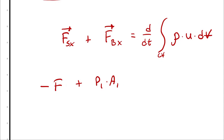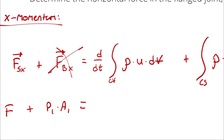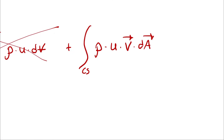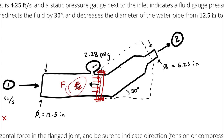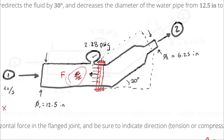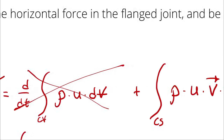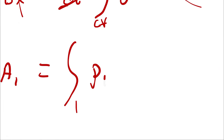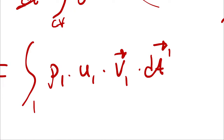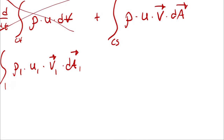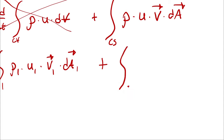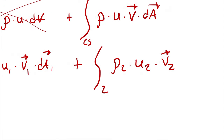Body forces have been neglected, and steady-state operation means the time-derivative term disappears. I'm left with the integral across each control surface crossing the boundary in the x-direction. I have two state points: at state 1 and state 2. State 2 also has an x-component of velocity even though it's not perfectly in the x-direction. So I split the control surface integral: ρ₁·u₁·V⃗₁·dA₁ plus ρ₂·u₂·V⃗₂·dA₂.